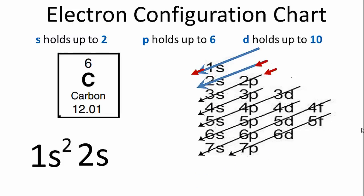Then we'll go down the next 2s, which also holds 2. We've used four of the electrons we have for carbon. So we go down the next row here, and we have the 2p.